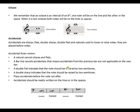An octave is an interval of an eighth. One note will be on the line and the other in the space. When it is two octaves, both notes will be on the lines or spaces. For example, the given note was C — the next octave is inside the space. For two octaves, you jump the first octave, then on the second octave you get your other C, which is also on the line. Counting the intervals: one octave is eight, and two octaves is fifteen.